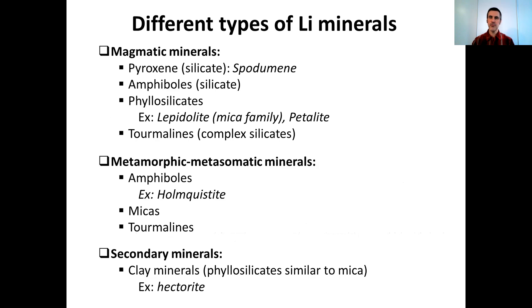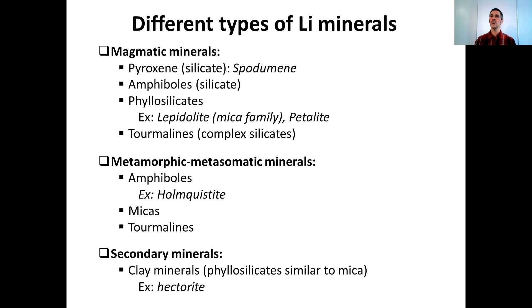In detail, looking at the different types of lithium minerals: the magmatic minerals — the most important is pyroxene, it's a silicate. And the most important mineral for lithium is spodumene, which is a pyroxene. We can also find among magmatic minerals, amphibolites, which are silicates quite similar to pyroxene, but they contain water in their chemical formula. Pyroxene, on the contrary, is dry.